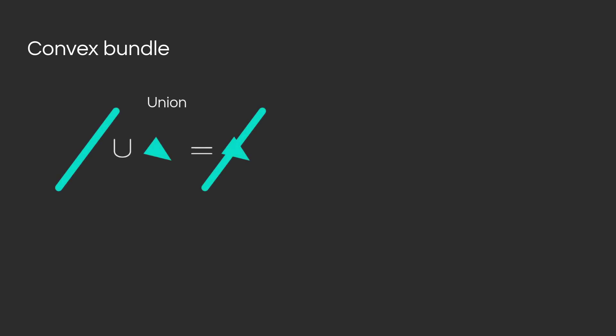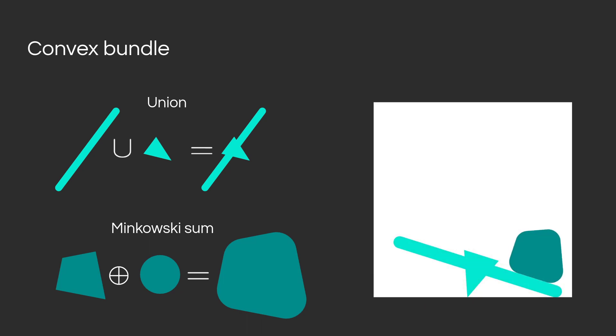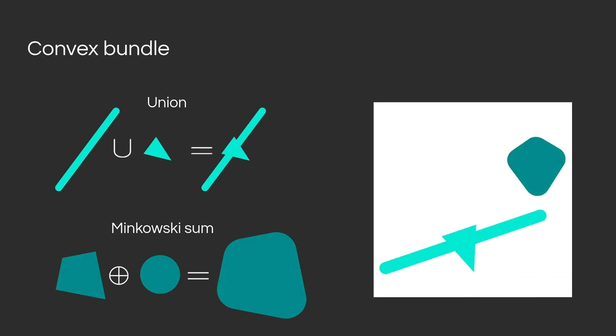We have seen how to perform collision detection between a pair of convex shapes. We can handle more complex shapes by combining convex primitives through union operations or Minkowski sum, and this is the result we get when we simulate those more complex shapes.